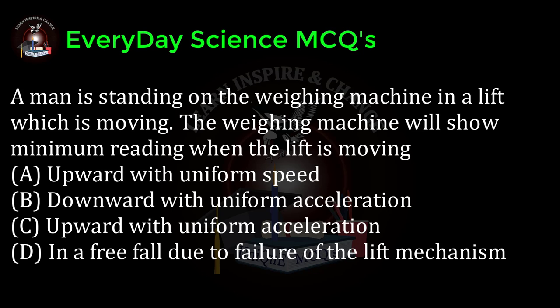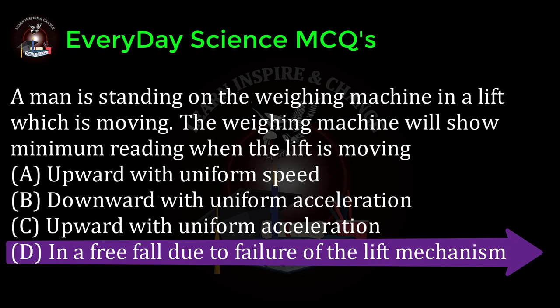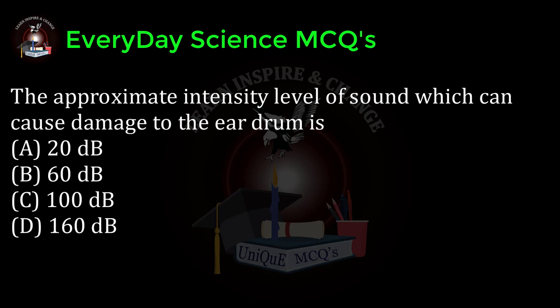A man is standing on a weighing machine in a lift which is moving. The weighing machine will show minimum reading when the lift is moving: a) upward with uniform speed, b) downward with uniform acceleration, c) upward with uniform acceleration, d) in a free fall due to failure of the lift mechanism. Correct answer: d.